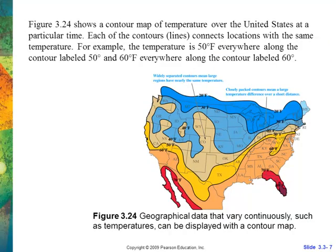Here's a map we're used to seeing with temperatures — showing regions in the 20s, 30s, 40s, 50s, 60s, 70s, 80s — indicating how warm or cold it is. This is what a typical geographical map with geographical data looks like.